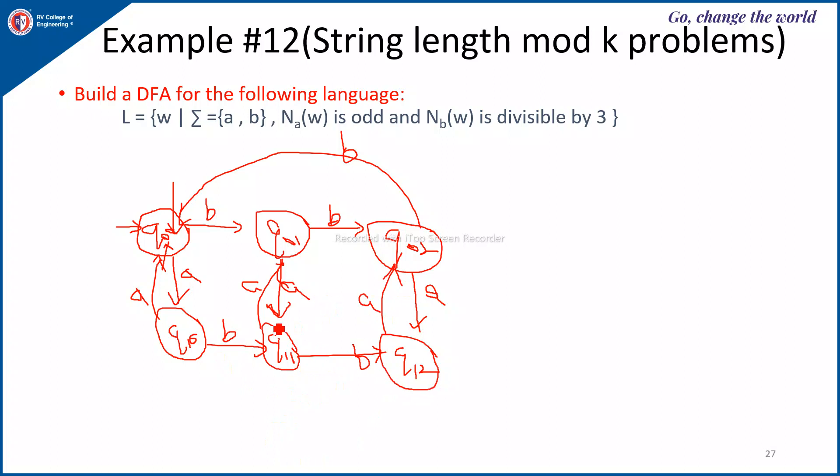So for every state you have 2 transitions, so for Q0 A, B, Q0, 1 A, B, Q0, 2 B, A. For every state you have 2 outgoing edges.